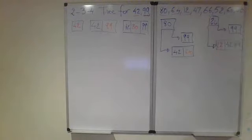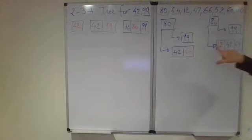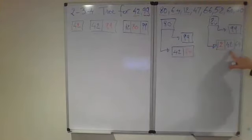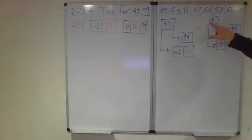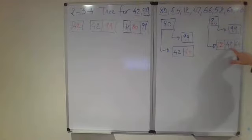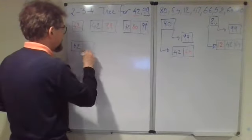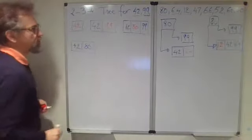Now 47 comes in, so 47 has to be inserted in this four-node here. We have to split it, very similar like we split this node here. The 42 now becomes inserted into the parent. We insert this to the root, making the tree, the root of the tree, into a three-node.